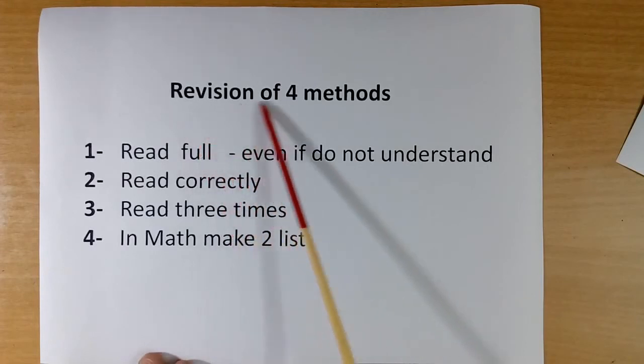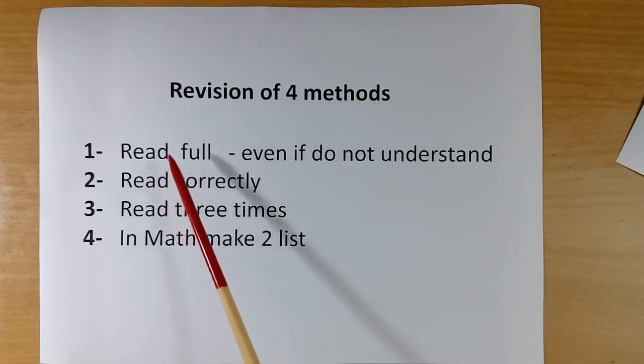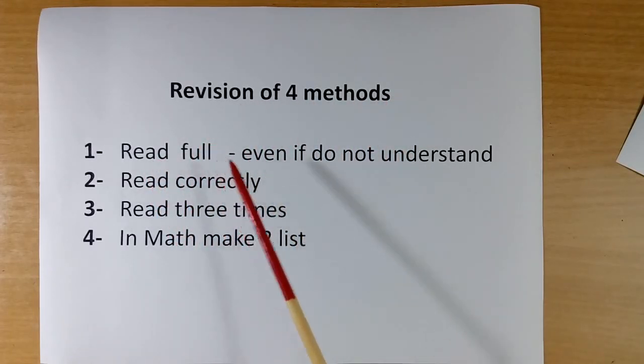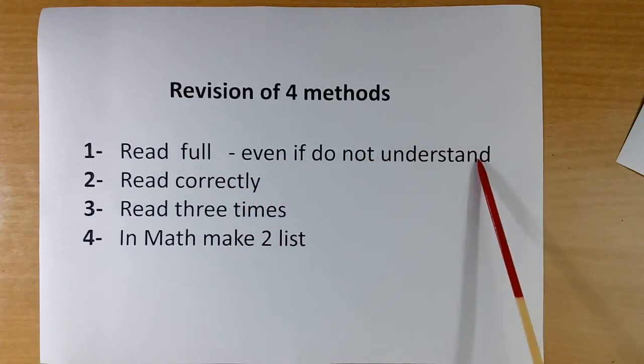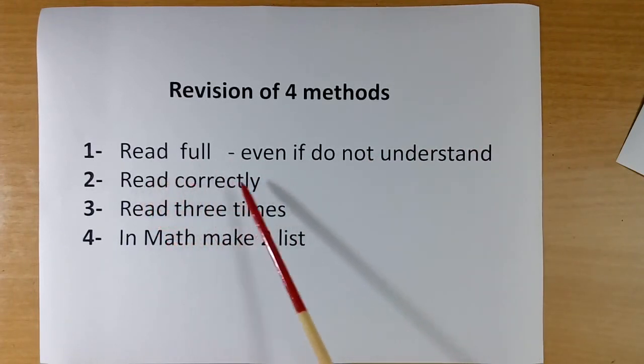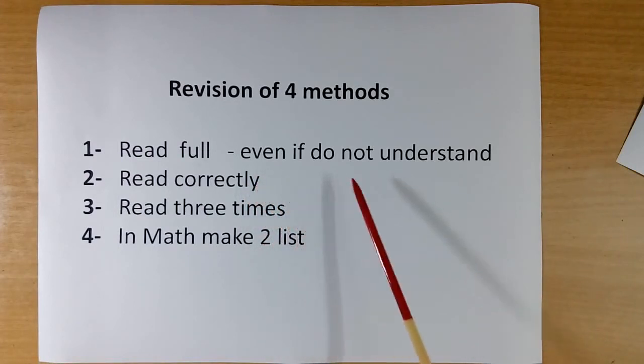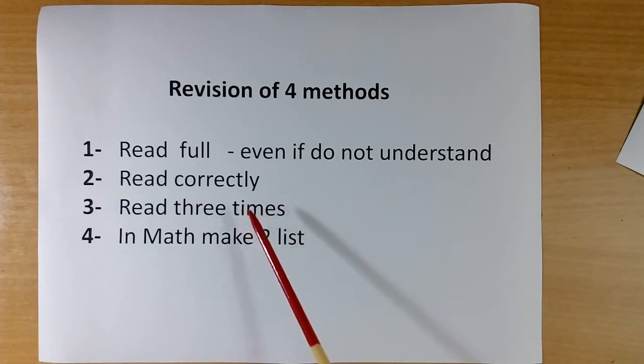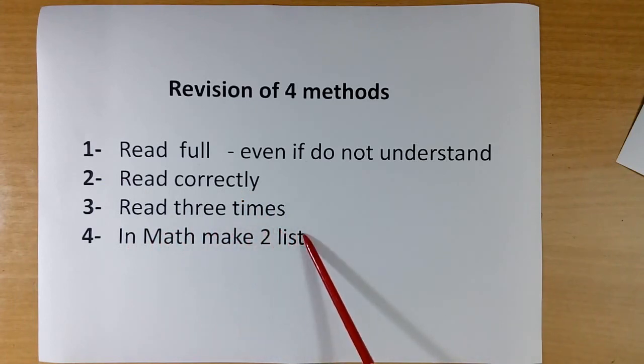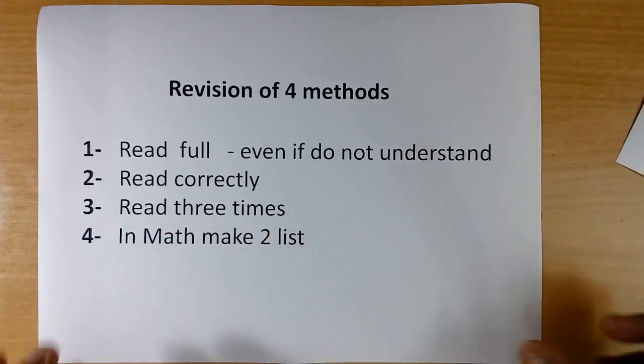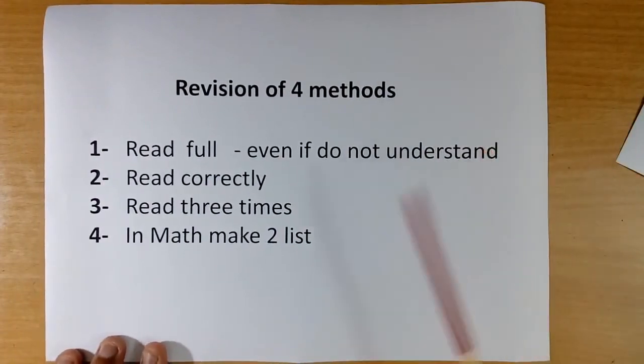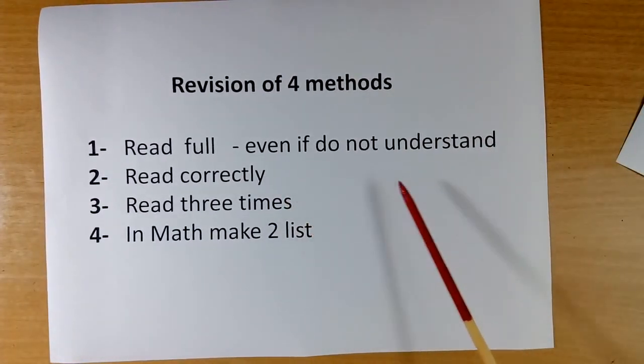Now repeat. Today I have told four methods. First is read full, even if you do not understand. Read correctly, without missing any word. Make a voice recording and listen. Read three times. Third time you have to read slowly, word by word. And if it is math, make two lists. If you follow these four methods, I am sure science and math will look simpler.